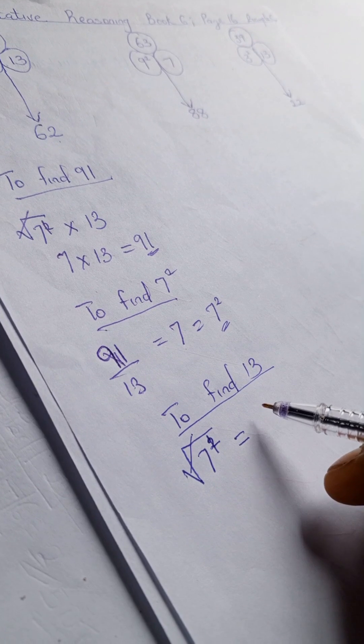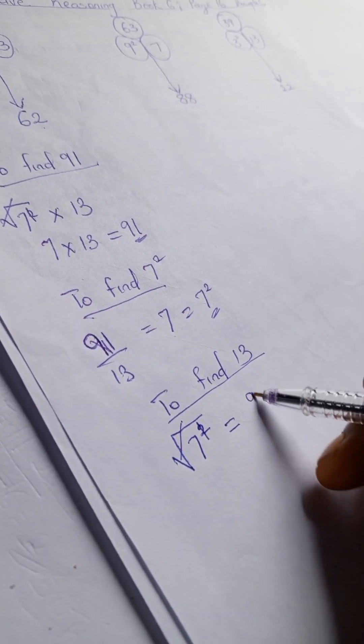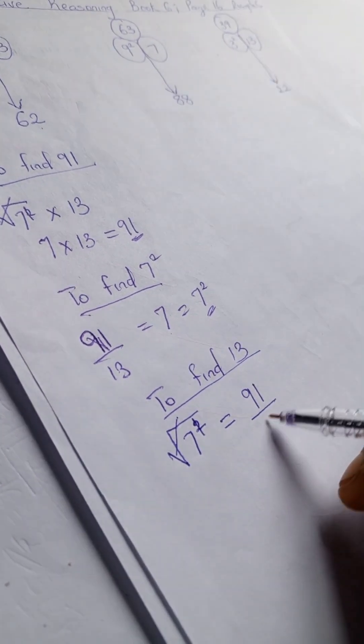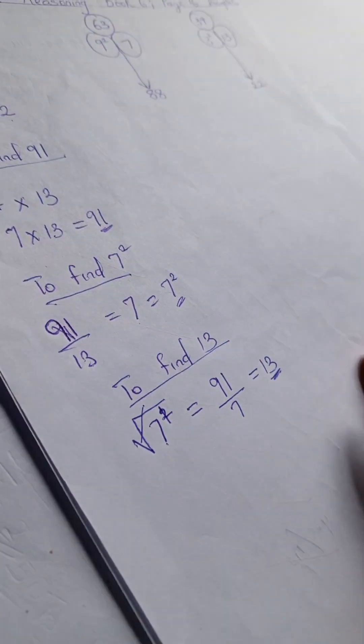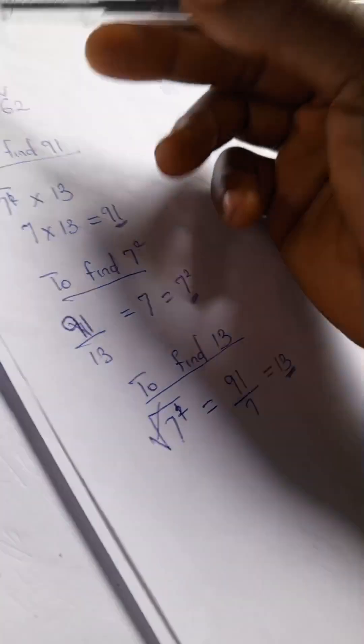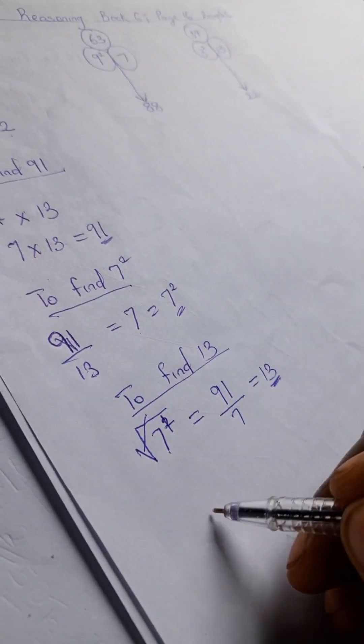So for 7, we then have 91 divided by the 7, you have your 13. You can as well decide that you pick out the 7, or whichever digit you have there without the square.